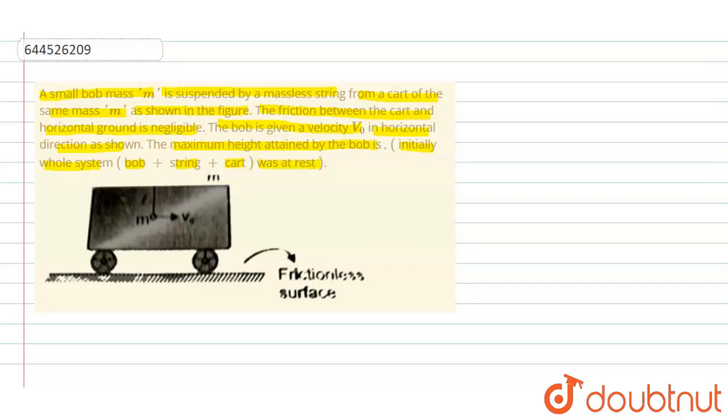Initially the whole system—that is, bob plus string plus cart—was at rest. Now according to the question, there is no friction, so I can say there is no external force. So the momentum of the system will remain constant. Now at the highest point, the bob and the cart will move with same velocity vf, let's suppose vf, because at the highest point the bob will be at rest with respect to cart. So both bob and cart will move with same velocity vf.